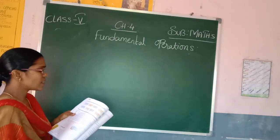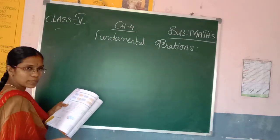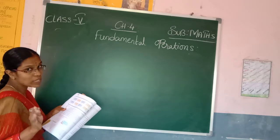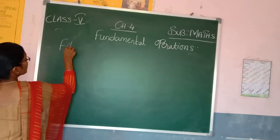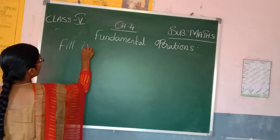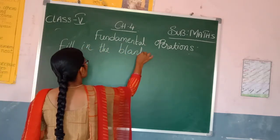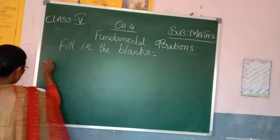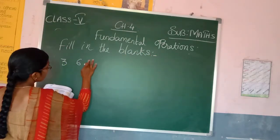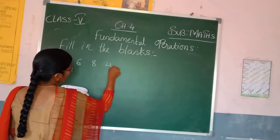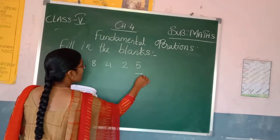Now see here, first one: fill in the blanks. What numbers are missing here, we have to do that. See the first one — what is given: 3, 6, 8, 4, 2, 5 and a box is given.